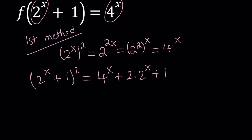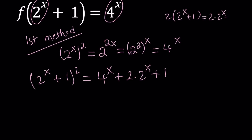So to make it factorable and get 2 to the power x plus 1 from there, we need 2 times 2 to the power x plus 1, which equals 2 times 2 to the power x plus 2. So I just need to add a 2 and then subtract a 2 — equivalently, add 1 and subtract 1. Since 1 minus 1 equals 0, this keeps the expression balanced.